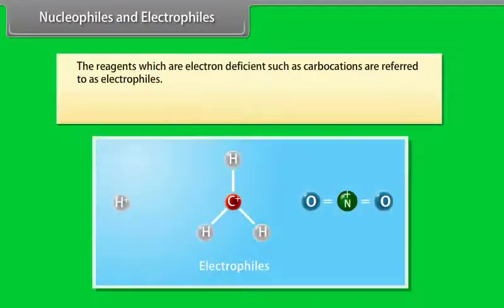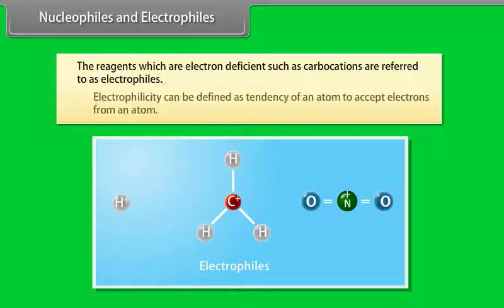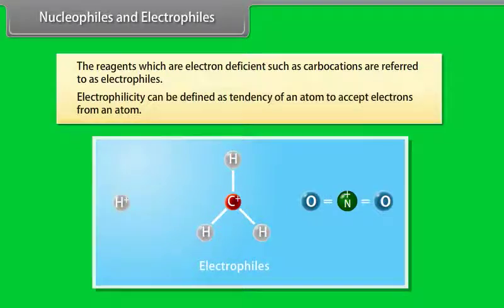Electrophiles: reagents which are electron deficient, such as carbocations, are referred to as electrophiles. Electrophilicity can be defined as the tendency of an atom to accept electrons from another atom.